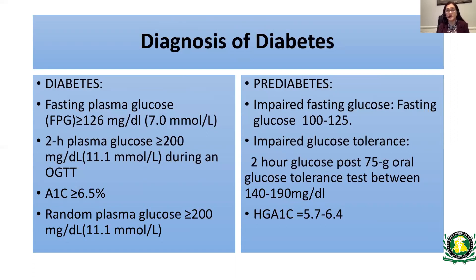Pre-diabetes is a condition in between normal and diabetic state — when your glucose is not normal but also not in the diabetic range. Pre-diabetes can be diagnosed with a fasting glucose of 100 to 125. A fasting glucose under 100 is considered normal. A 2-hour post-75-gram glucose tolerance test between 140 to 199 is consistent with pre-diabetes. And a hemoglobin A1c of 5.7 to 6.4% is also consistent with pre-diabetes.